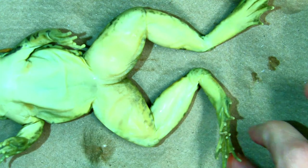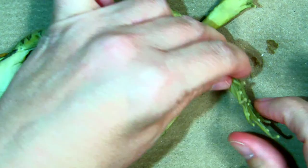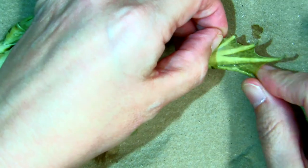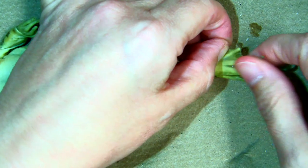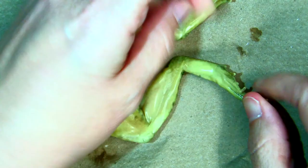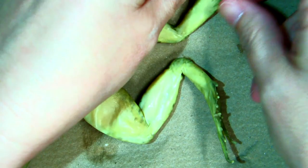On their feet, they have five digits with a web membrane in between, which helps them swim through the water.